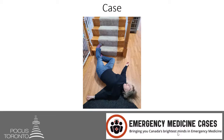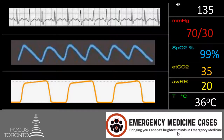Let's look at a case. This is a 60-year-old female who was walking down the stairs, tripped and fell. She's complaining of abdominal pain and is brought to the emergency department with the following vitals: a heart rate of 135 beats per minute and she's hypotensive at 70 over 30. She is saturating 99% on room air, end-tidal CO2 of 35, respiratory rate of 20, and temperature is normal at 36 degrees Celsius.